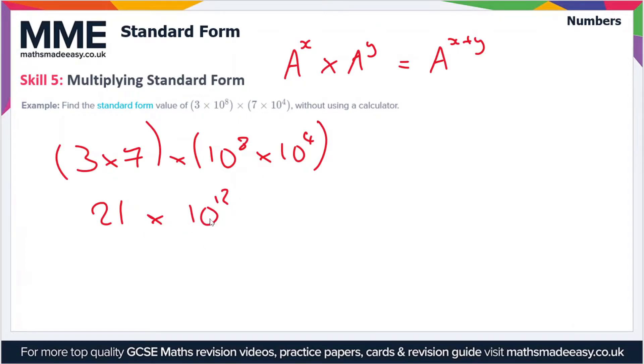This might look like standard form, but it's not actually in standard form yet. The number at the start has to be between 1 and 10. So what we have here is 2.1×10×10¹². Since 21 divided by 10 is 2.1, all I've done is take out that 10 to get the 21 into 2.1 so it's between 1 and 10.